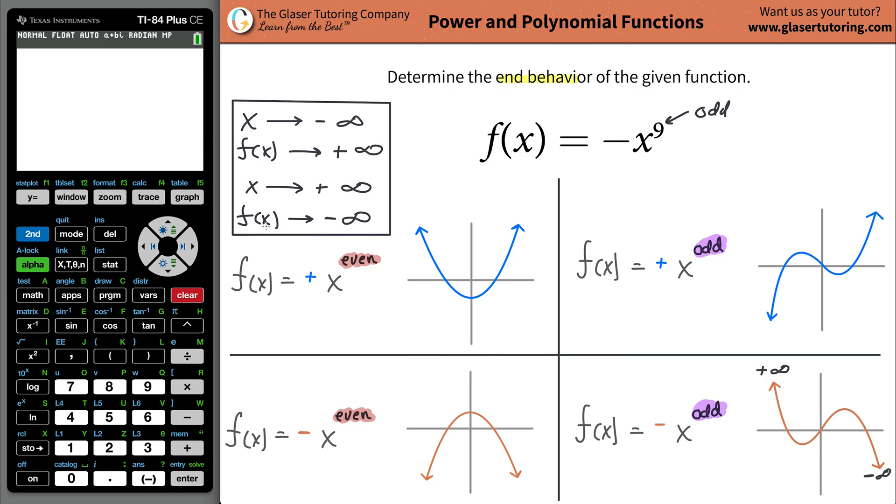If you don't trust me, take a look at your calculator. Just plug it in. Go to y equals, plug in negative, that's the sign down there, and then x raised to the ninth. No parentheses, no nothing, just plug it in how you see it. Hit graph.